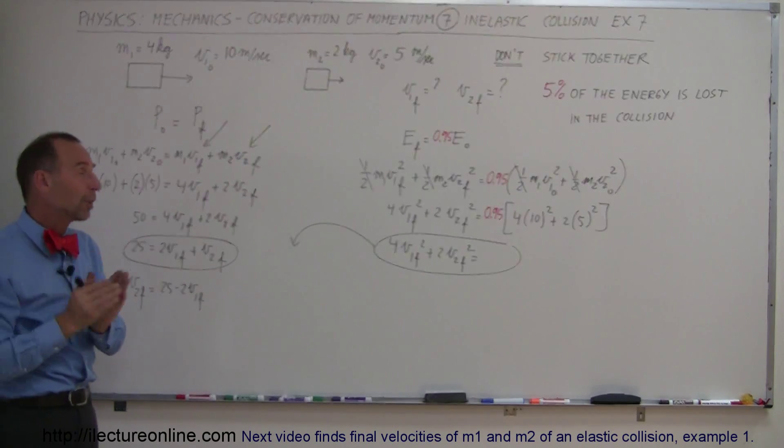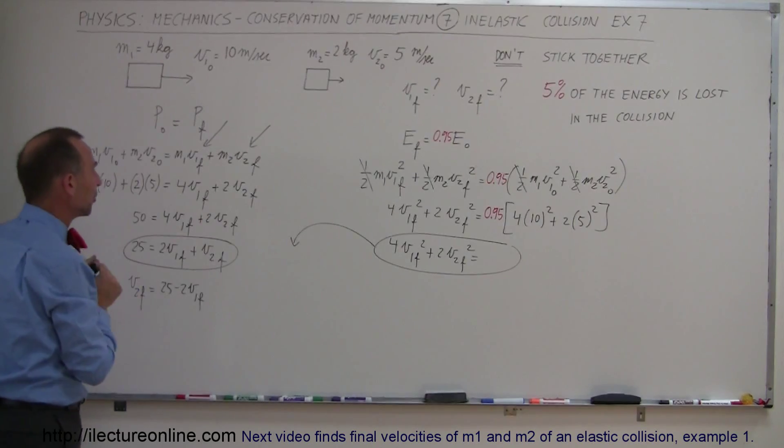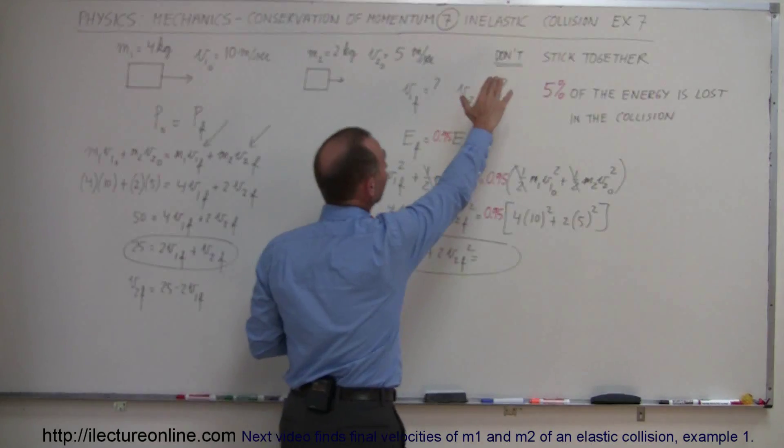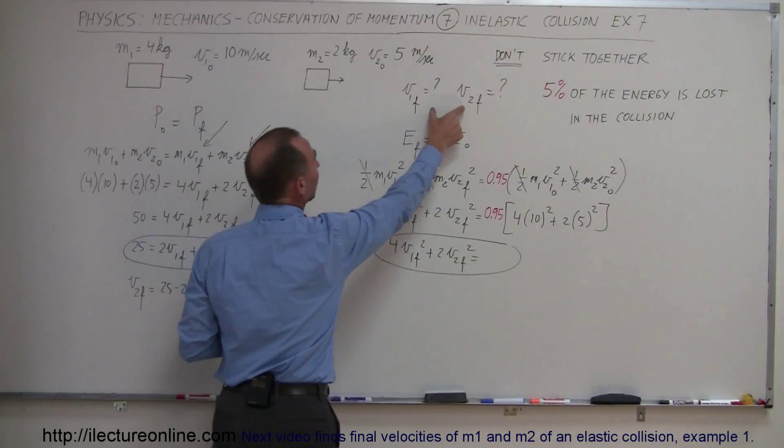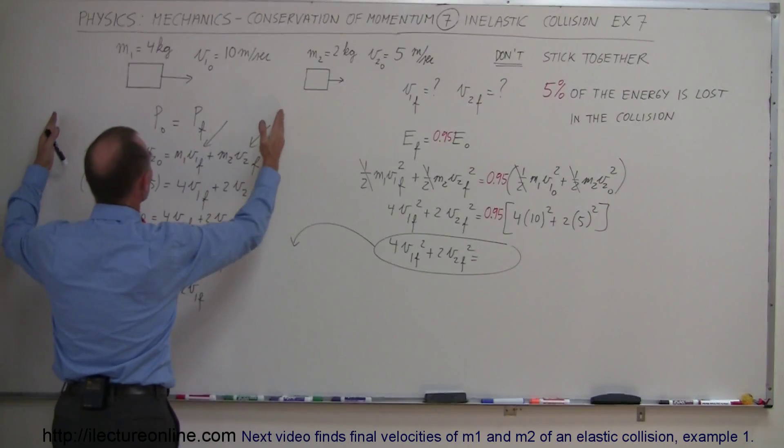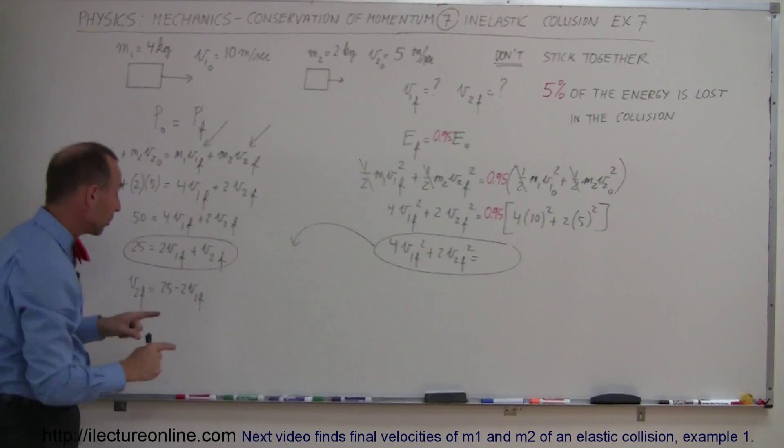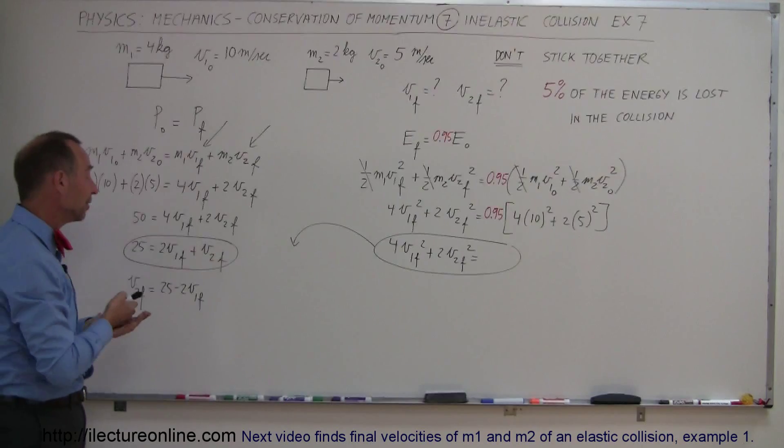The reason why we want to do the problem like this is whenever they give you a conservation momentum problem where the collision is inelastic and they don't stick together, that means they both have an independent velocity that you're trying to find. By using conservation momentum alone by itself you cannot solve the problem because you end up with two unknowns in only one equation. Can't solve for V1 and V2 simultaneously.